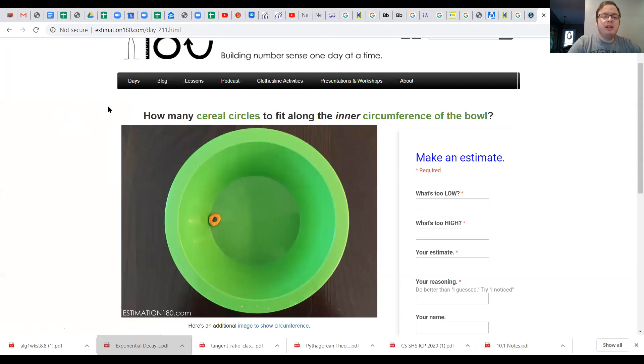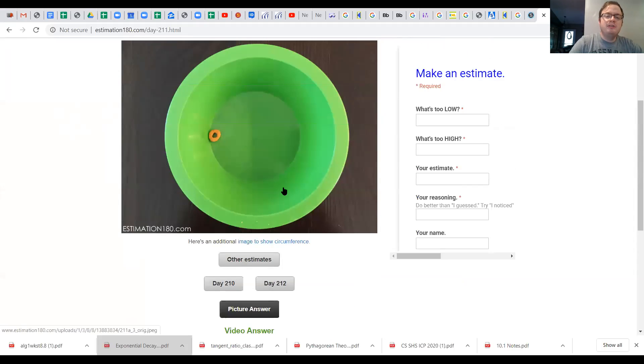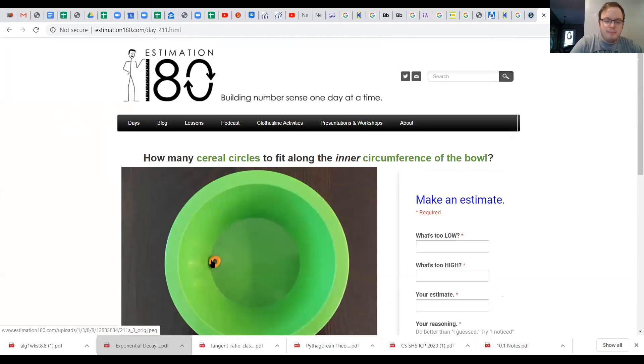The estimate is 180. How many cereal circles, like Cheerios, fit along the inner circumference of the bowl? How many cereals can go all the way around the bottom? I'll give you five seconds to pause and make your guess.